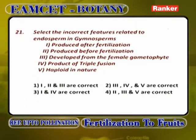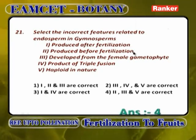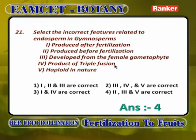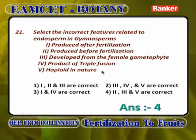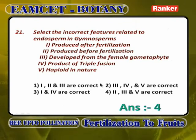Select the incorrect feature related to endosperm in gymnosperms. Produced after fertilization is wrong — it is produced before fertilization. Developed from female gametophyte is correct. Product of triple fusion is wrong. Haploid nature is correct. So statements 2 (produced before fertilization), 3 (developed from female gametophyte), and 5 (haploid nature) are correct; 1 and 4 are wrong.